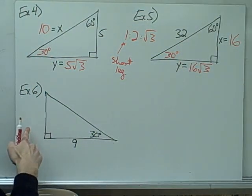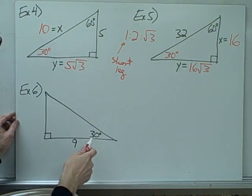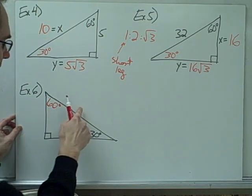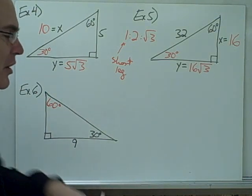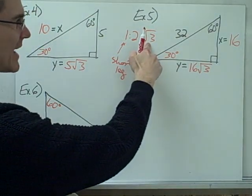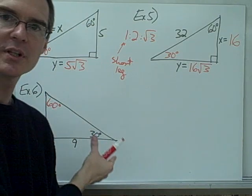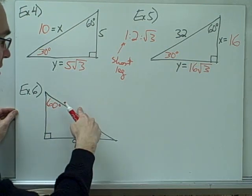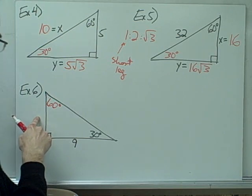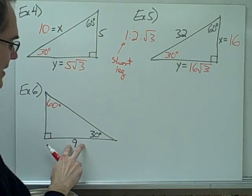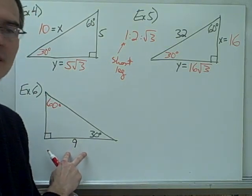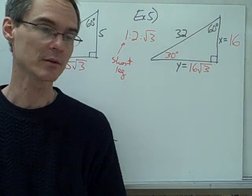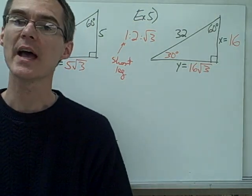Example 6 is more complicated: I still have a 30-60-90 triangle, but I don't know the short leg or the hypotenuse — I only know the long leg, and that side has √3 in it. This makes it more difficult. I can't just say the short leg is 9√3 and the hypotenuse is 18, because 9 is not the shortest side — it's the longest leg. I'll leave this example for you to work out, and we'll look at it tomorrow in class.